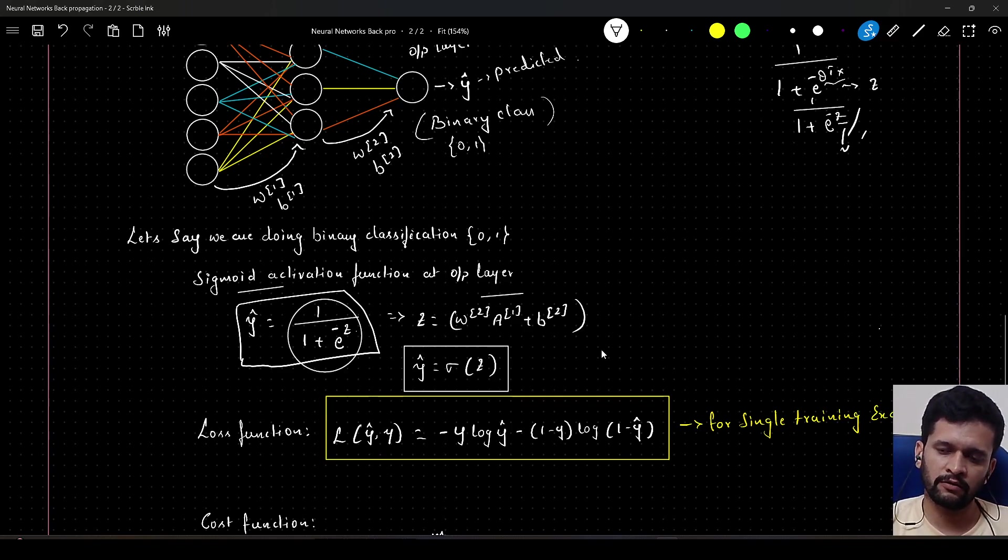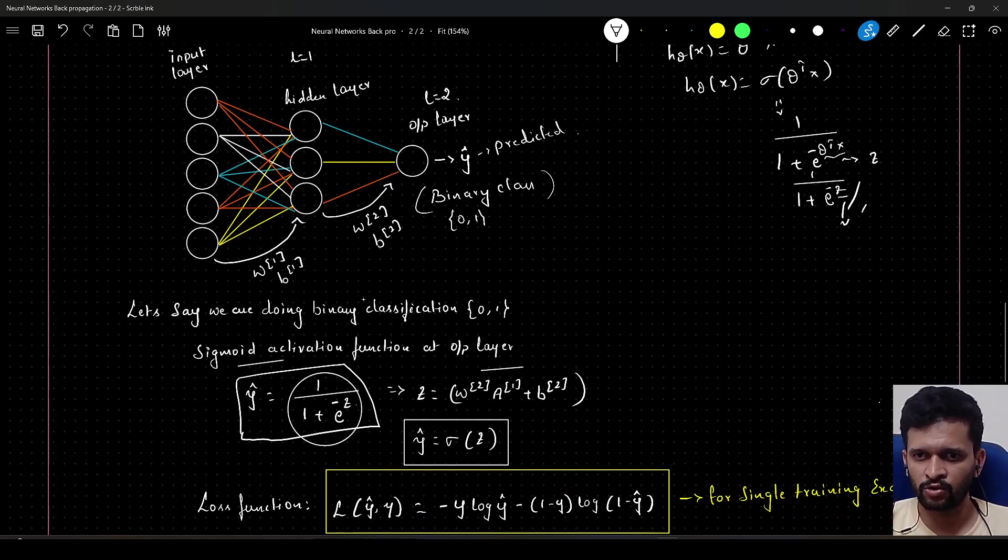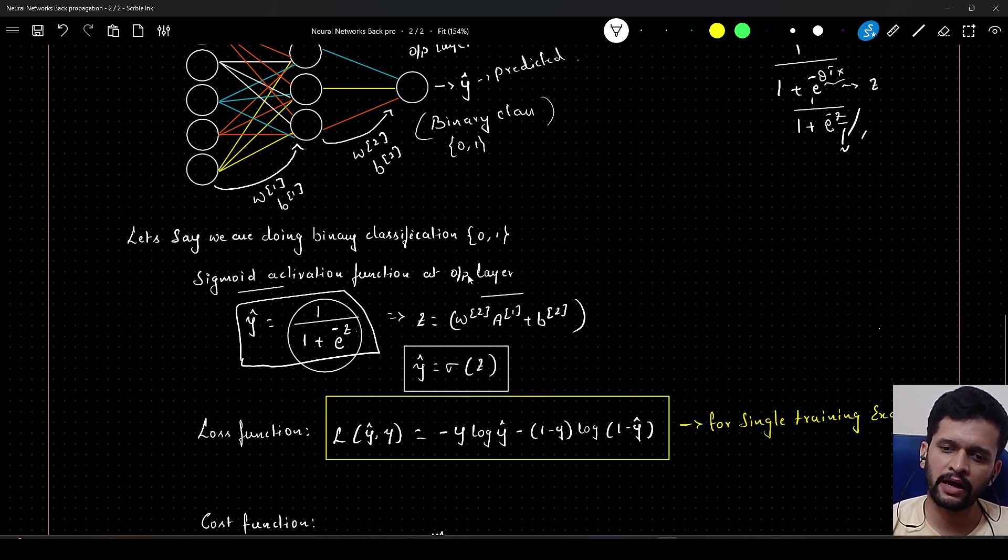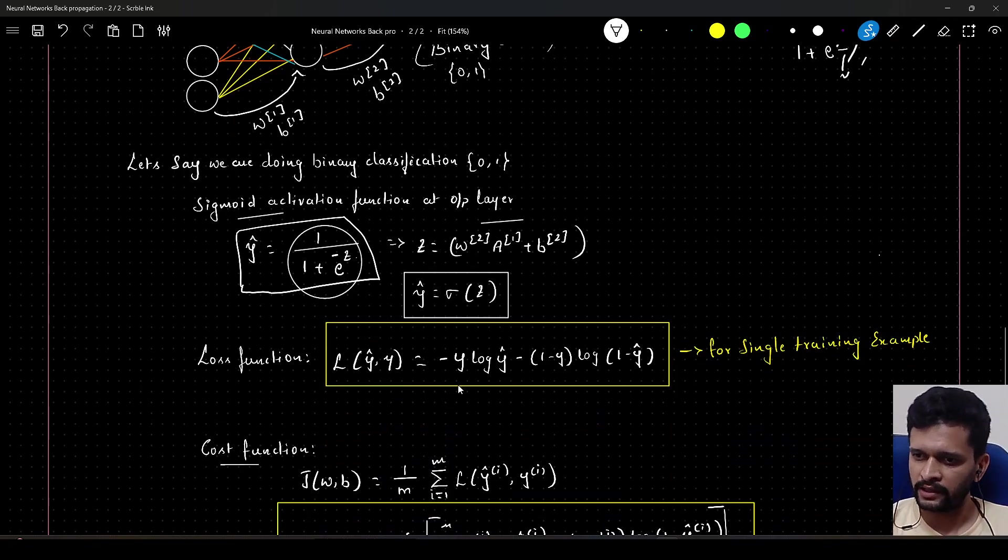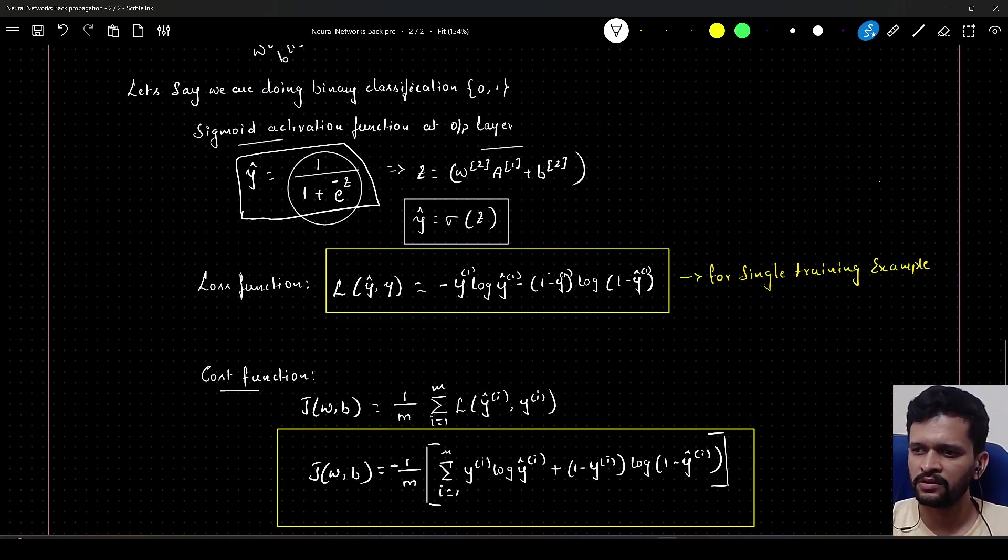We have done a forward pass and it has predicted something. But in order to check whether that prediction is correct or not, we will have something called a loss function. That loss function is given by minus y1 log of y hat 1 minus 1 minus y1 log of 1 minus y hat 1. This is the same loss function as we have seen during our machine learning logistic regression implementation. This loss is for single training example.